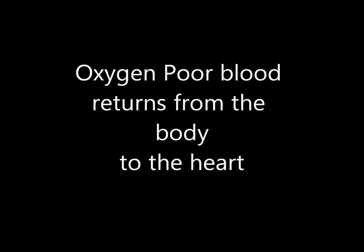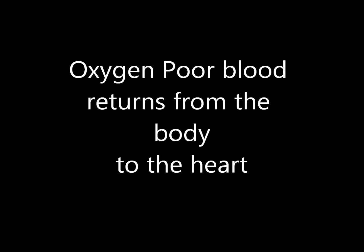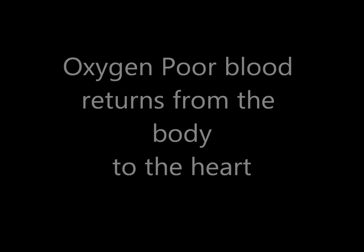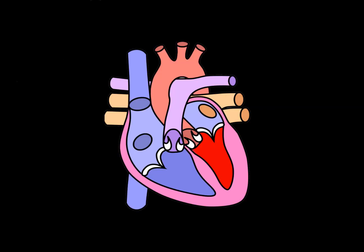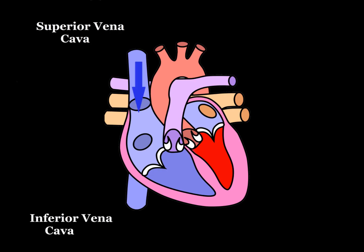Oxygen-poor blood returns from the body to the heart via the superior vena cava and the inferior vena cava. Blood then enters into the right atrium.